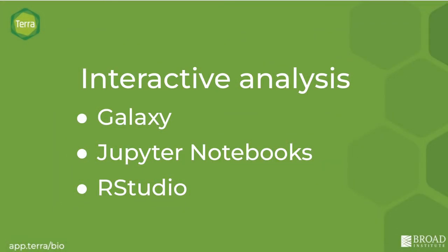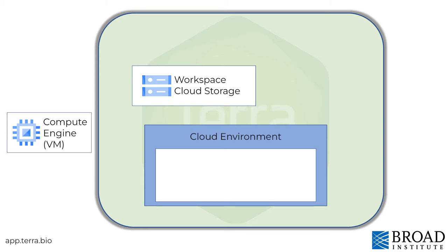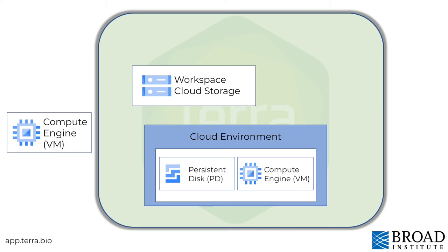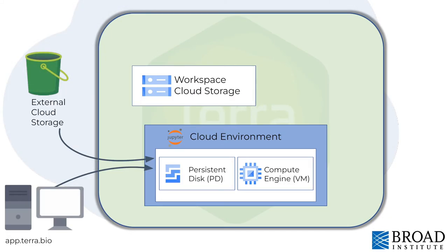You can also run interactive analysis apps in Terra. Galaxy, Jupyter Notebooks, and RStudio run in a cloud environment virtual machine. Each cloud environment comes with its own persistent disk storage and VM compute engine. You can customize the cloud environment right in Terra when you launch Galaxy, Jupyter, or RStudio. You will need to move input data into the cloud environment persistent disk for analysis, even data from workspace storage, because these are separate systems.